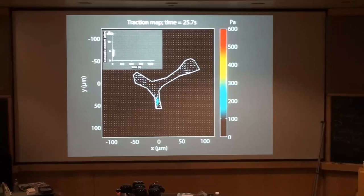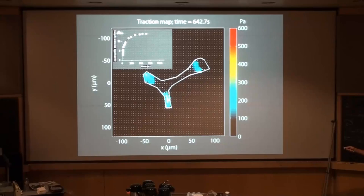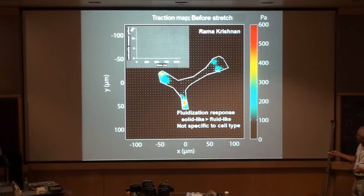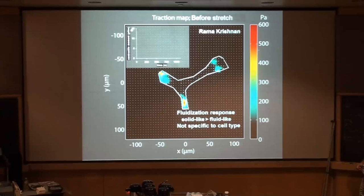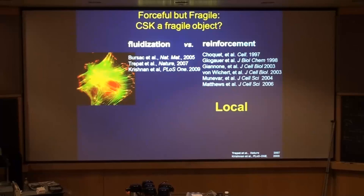The graph shows recovery over about 600 seconds. It's a fluidization response — the cytoskeleton went from a solid-like to a fluid-like state. This seems to be universal; we've looked at about a dozen or fifteen different cell types and it appears to be a universal phenomenon.